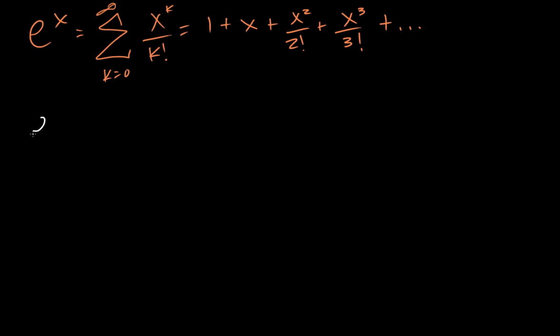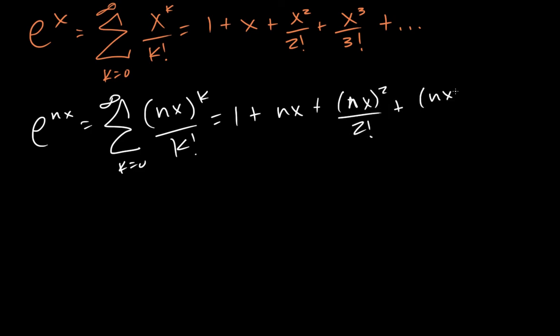And I just need some room. Okay, and then e to the nx. So we say nx to the k over k factorial. 1 plus nx plus nx squared. And we get 1 plus n squared x squared over 2 factorial and n cubed x cubed over 3 factorial. Alright, okay, part B says.